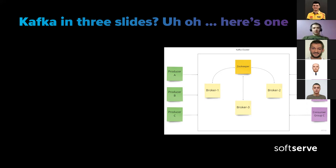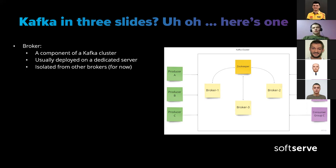Here's what we have in this picture: a Kafka cluster boundary containing four components — three brokers and a zookeeper. Brokers are components of a Kafka cluster usually deployed on a dedicated server. The reason is you want to achieve durability, which means failovers are important. If one broker fails, you should be capable of failing over to a different one. Typically you would put one broker per physical server.